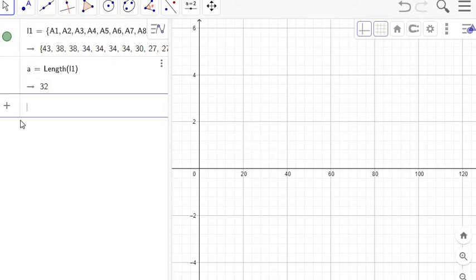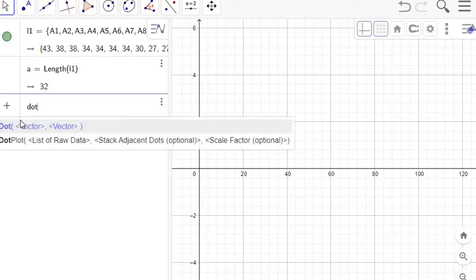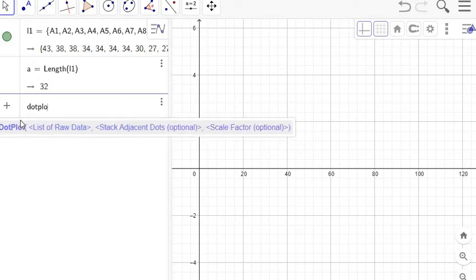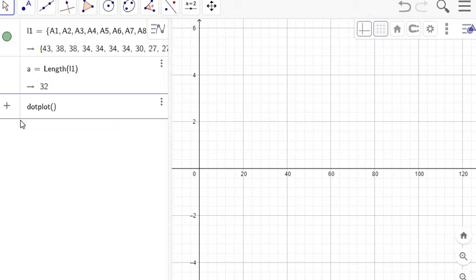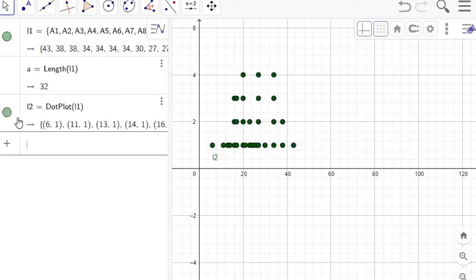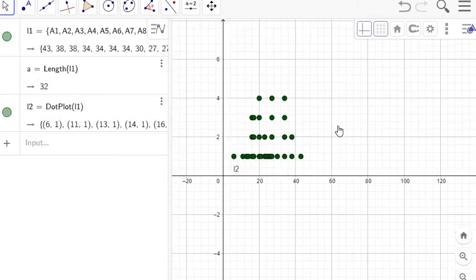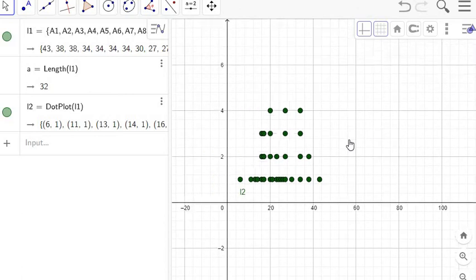So dot plots are really easy. In the input bar, I just type the command dotplot, and you see that it starts listing available options there. So dotplot, parentheses, and just give it the name of the list. Mine's called L1, and there you go. There's the dot plot, and I can zoom in and out a little bit if I wanted.